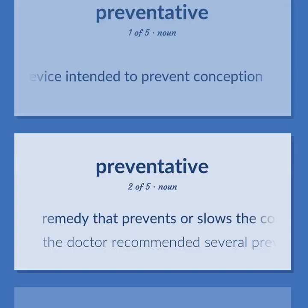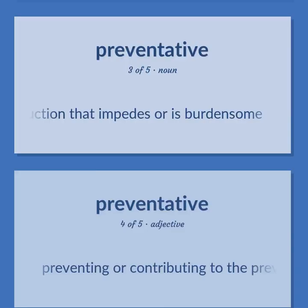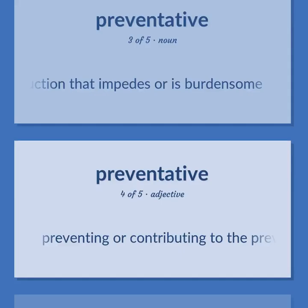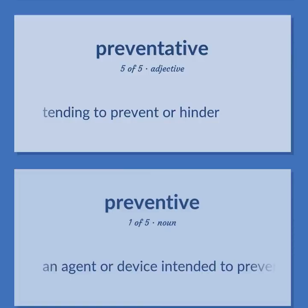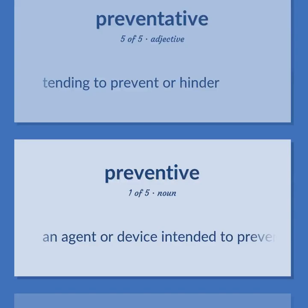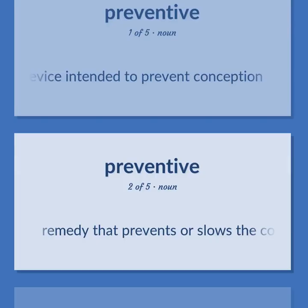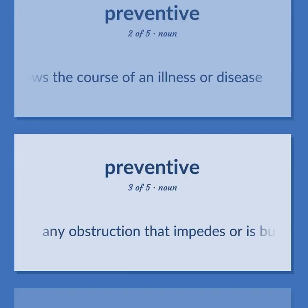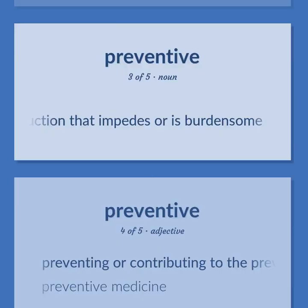Remedy that prevents or slows the course of an illness or disease — the doctor recommended several preventatives. Any obstruction that impedes or is burdensome. Preventing or contributing to the prevention of disease. Tending to prevent or hinder. An agent or device intended to prevent conception. Remedy that prevents or slows the course of an illness or disease. Any obstruction that impedes or is burdensome. Preventing or contributing to the prevention of disease — preventive medicine.